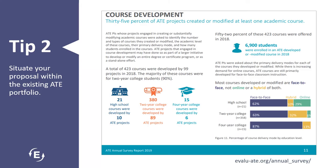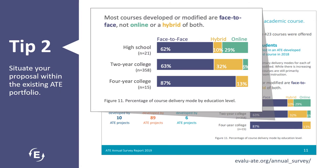Turning to another example, 35% of ATE projects created or modified at least one academic course in 2018. As shown here, only 6% of two-year colleges developed or modified online courses in 2018. Given an increase in distance learning, does your institution need financial support for transitioning technical classes to an online environment? This is one way your proposal could meet an institutional need while also proposing something novel, and one example of how ATE survey findings can point to where your proposed activities might be meeting a need.